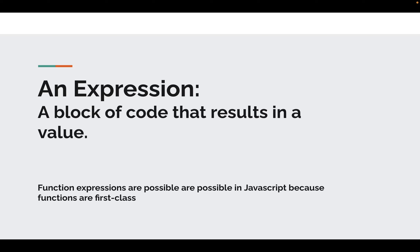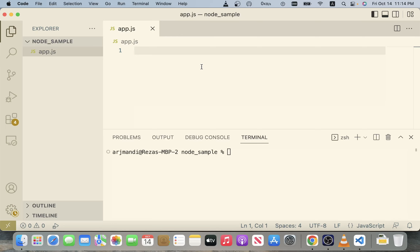Function expressions are possible in JavaScript because functions are first class. Just like writing a string or a number results in a value, you can use a function expression to create a function essentially on the fly. Let's use Node to run some JavaScript and see what this looks like. I have an app.js file open in Visual Studio Code.